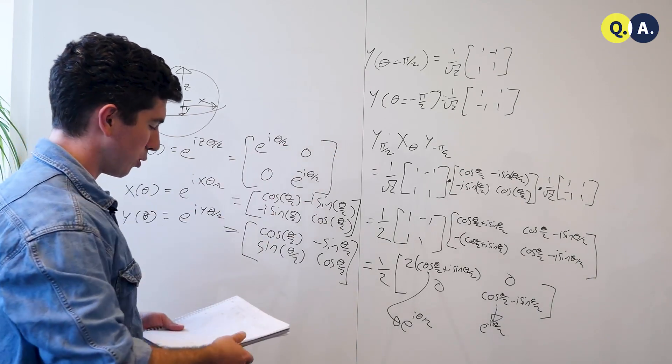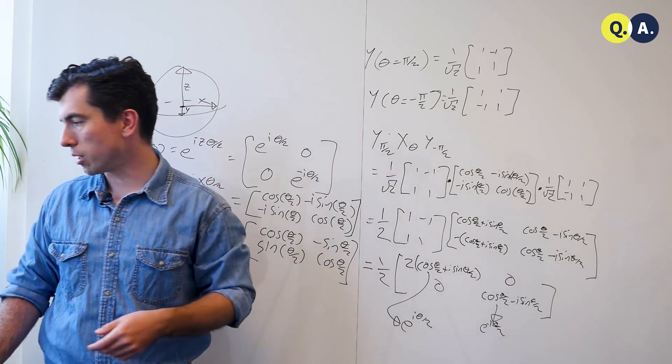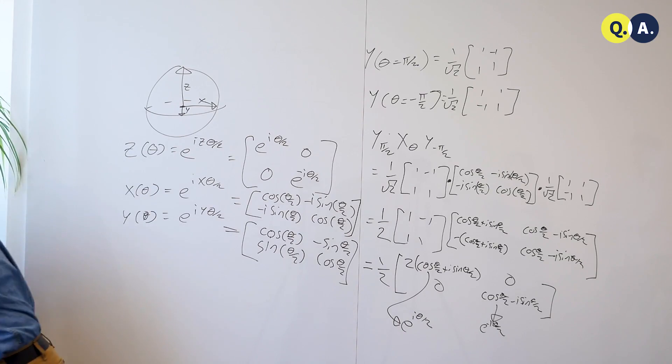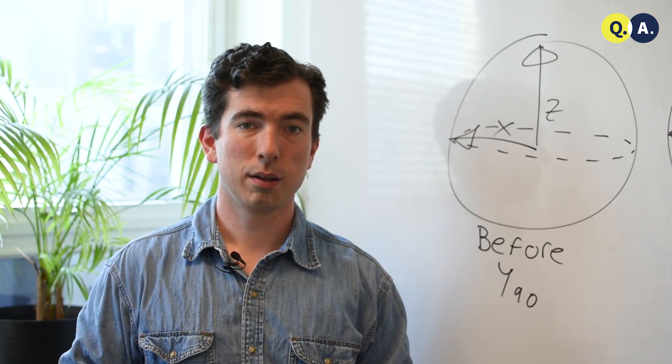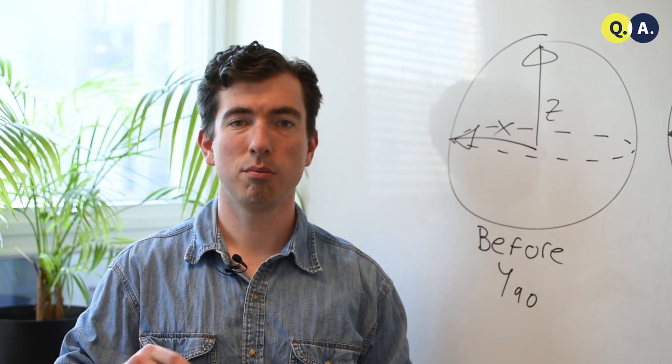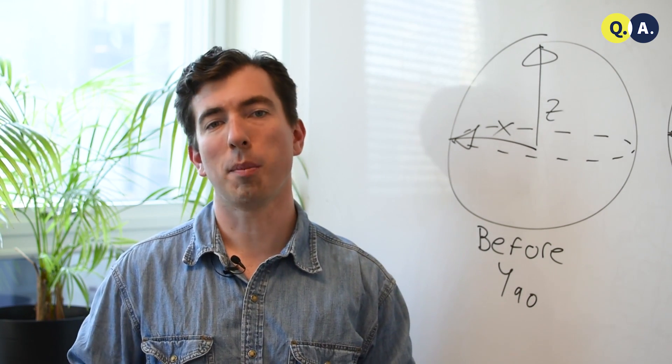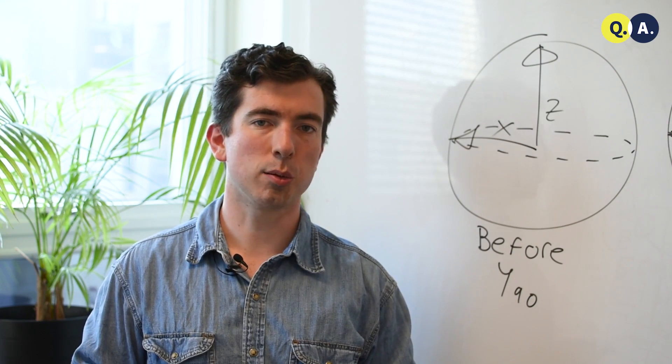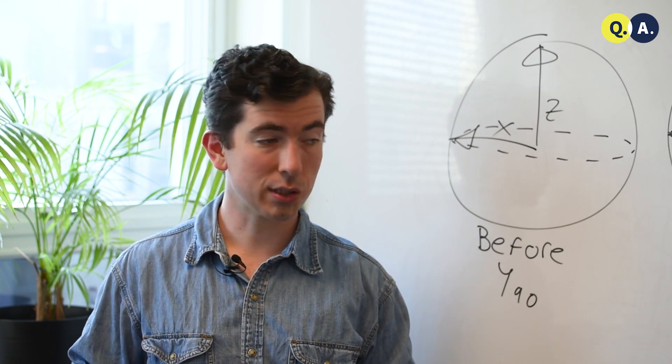But this is not as simple as it could be. There's a far easier way to see this, which we can do using the Bloch sphere. The action of this sequence of unitary operations, y90, x around some angle theta, and then y-90, can be expressed in terms of matrices, but it's much easier to understand using the Bloch sphere.